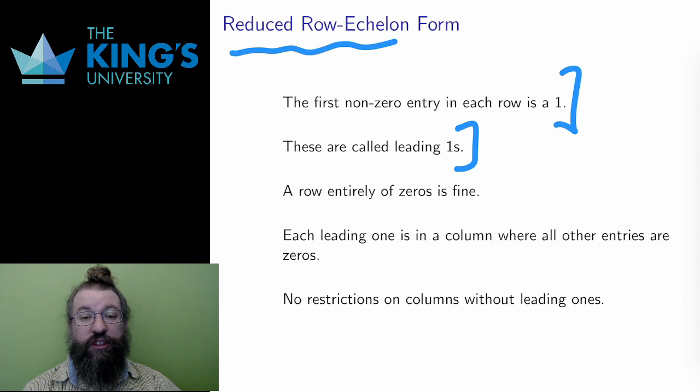Since the first non-zero entry must be a 1, ending up with a row of 0s is in fact perfectly fine in this form. Each leading 1 is in a column where all the other entries must be 0. So above and below a leading 1, I can only find 0s in the matrix.